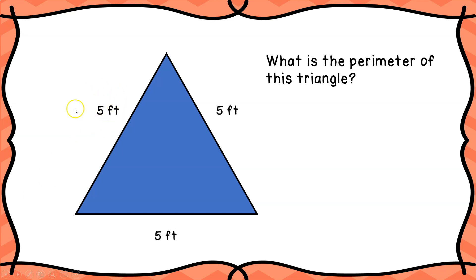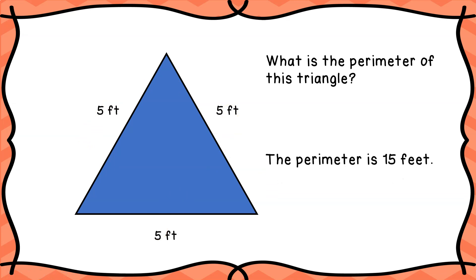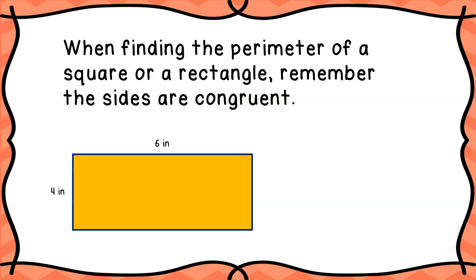Now what is the perimeter of this triangle? It has three sides: five feet, five feet, and five feet. Remember, we're going to use repeated addition, so we add five plus five plus five. Five plus five is ten, plus five more is fifteen. So the perimeter of the triangle is fifteen feet.